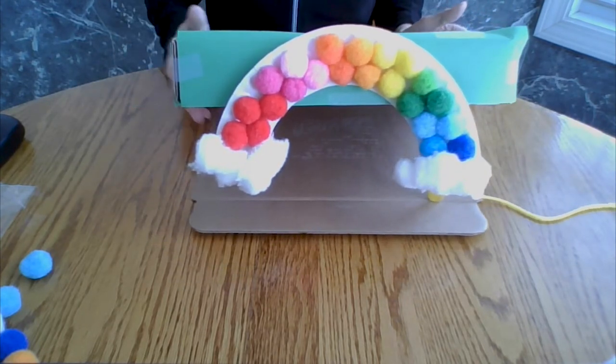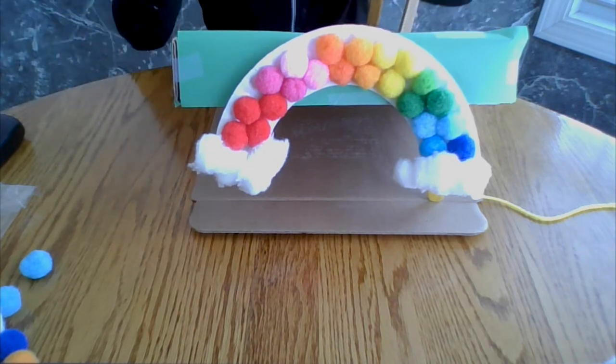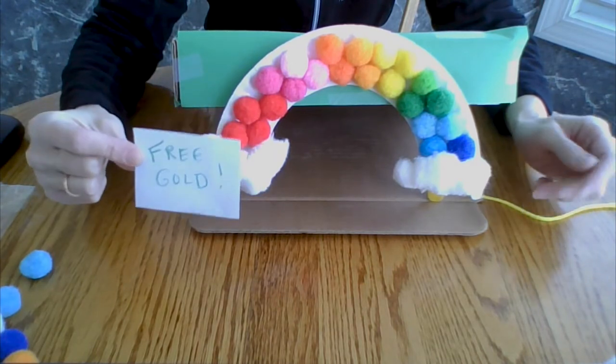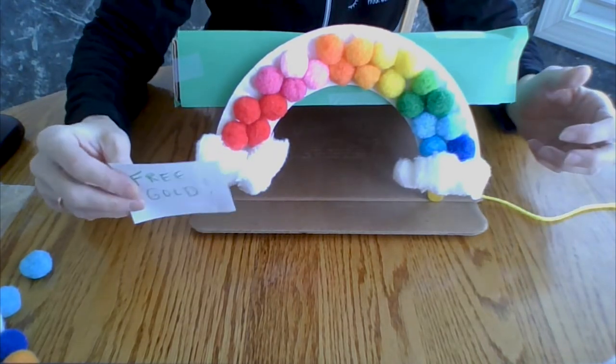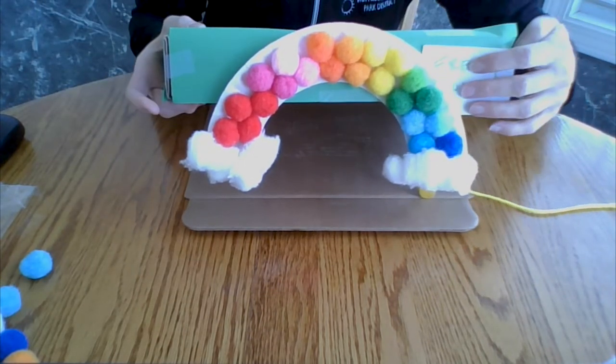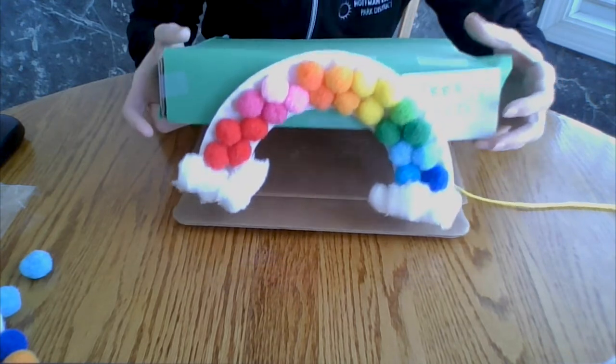And then we've got two things left. There's a piece of paper in there that you can make a sign. I wrote this says free gold to attract my leprechaun. You don't have to have a sign or you can write whatever you like. You can write it directly on the box if you'd rather. There's my sign.